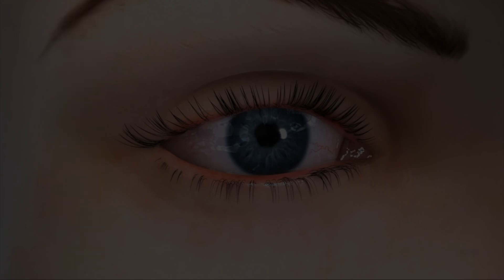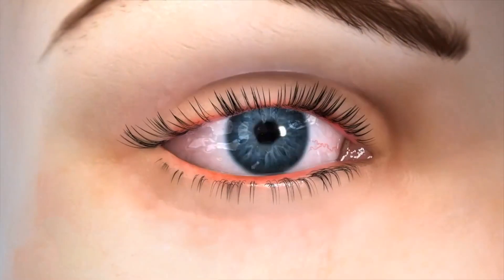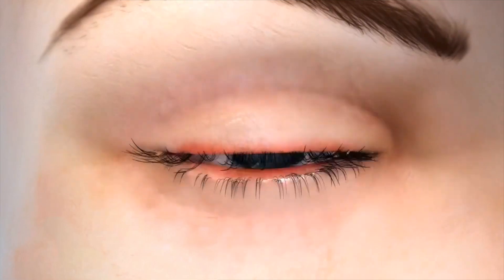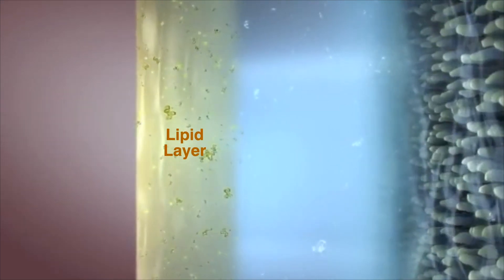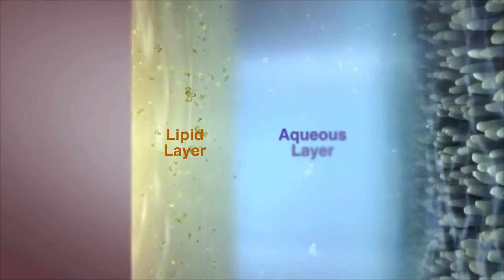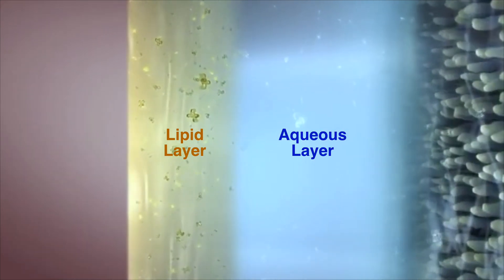Keep in mind that this test only measures lacrimal gland aqueous tear production. Tears are actually quite complex, composed of three different layers secreted by different glands and tissues. There is the oily outermost lipid layer, and the water-like middle aqueous layer, produced by the lacrimal gland.